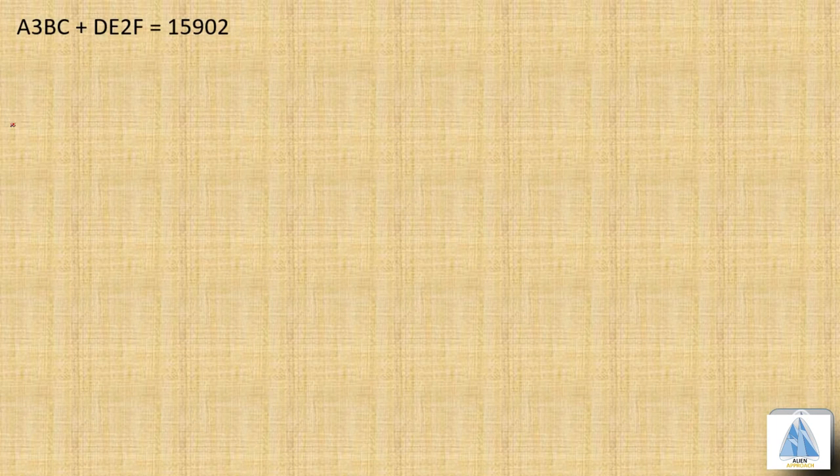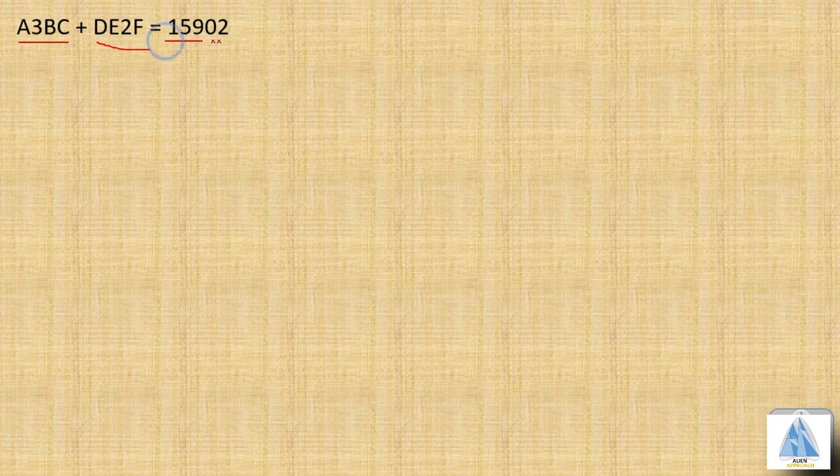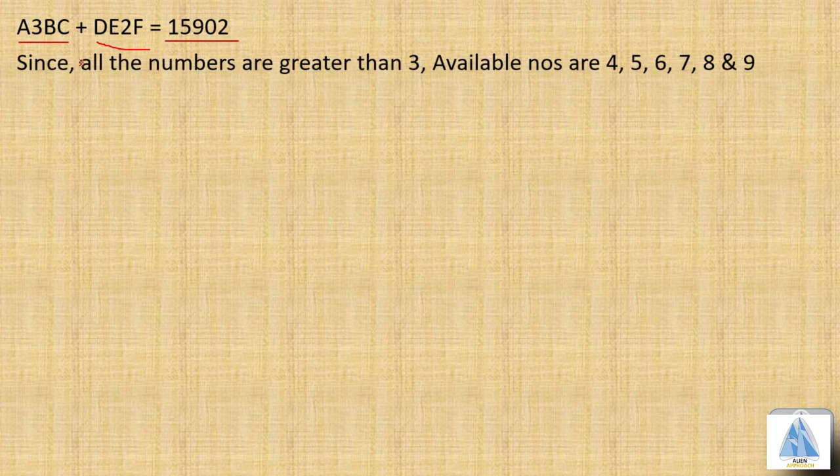We have the expression A3BC + DE2F = 15902. Since all the numbers are greater than three and all numbers are different, the available numbers are 4, 5, 6, 7, 8, and 9, which will replace the letters A, B, C, D, E, and F.